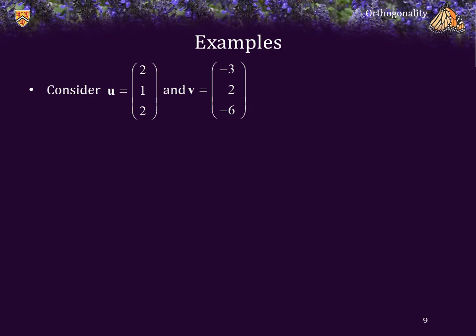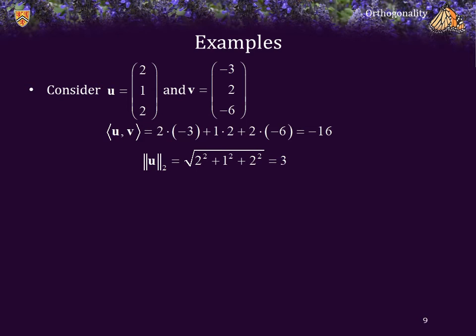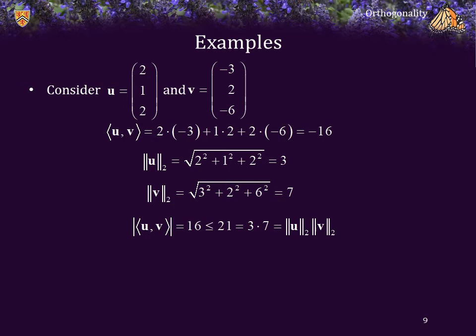Here's another example: u is equal to (2, 1, 2), v is equal to (-3, 2, -6). The inner product of these two vectors is 2 times -3, or -6, plus 1 times 2, plus 2 times -6 — so -6 plus 2 minus 12, which is -16. The two-norm of u is the square root of 4 plus 1 plus 4, which is the square root of 9, or 3. The two-norm of v is the square root of 3 squared plus 2 squared plus 6 squared, which is 36 plus 9 plus 4, which is 49 — and the square root of 49 is 7. The absolute value of the inner product, which is 16, is less than or equal to the product of the two 2-norms, which is 21.